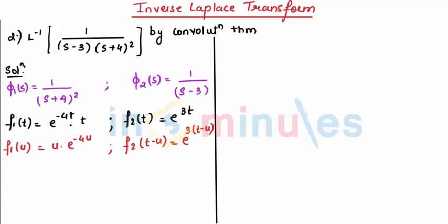So my formula says me L inverse of phi 1 of s into phi 2 of s that is equal to 0 to t f 1 of u f 2 of t minus u du. Let's replace it.